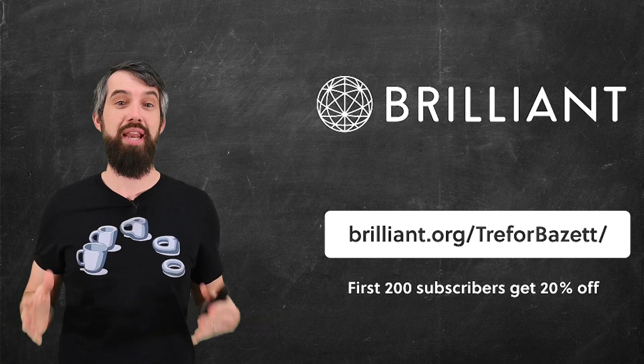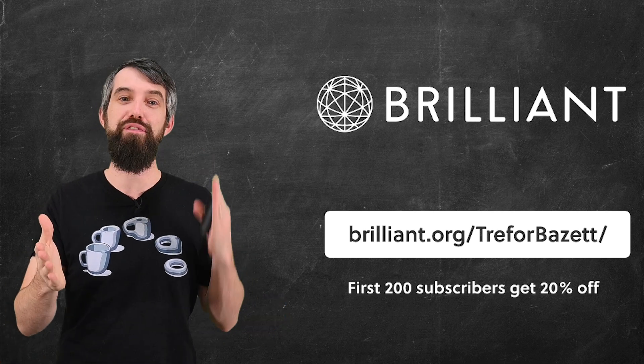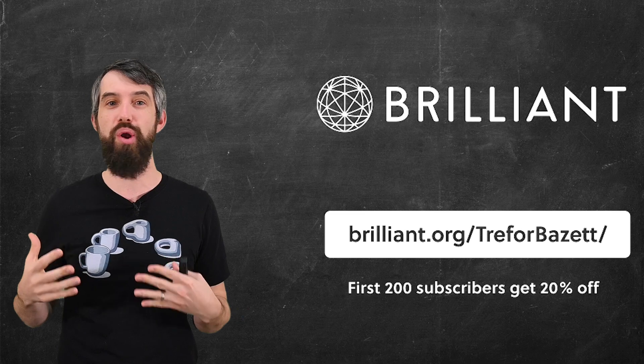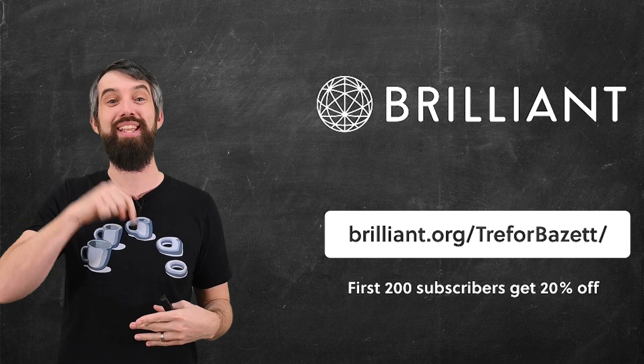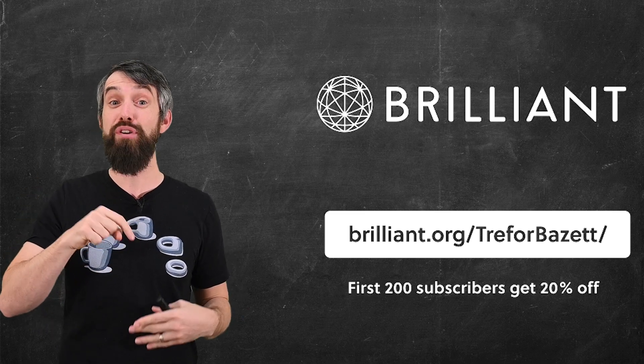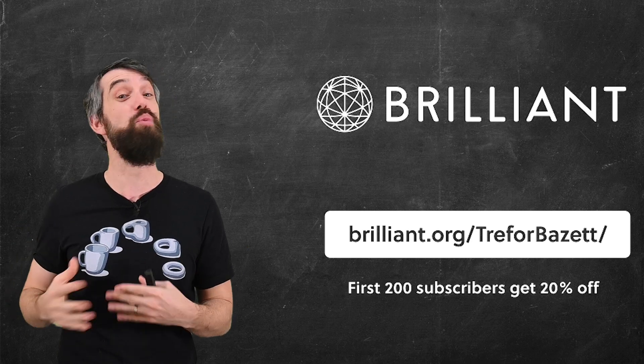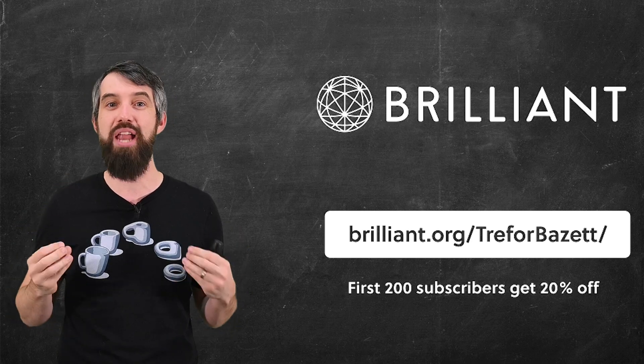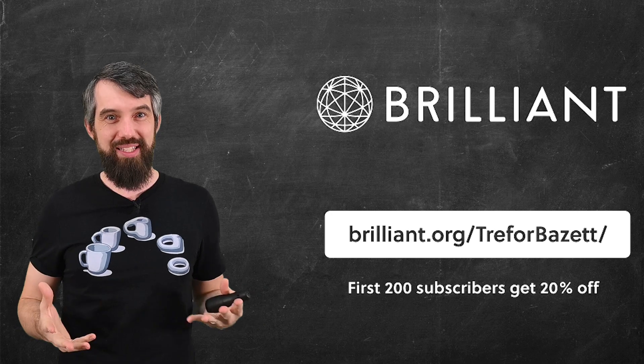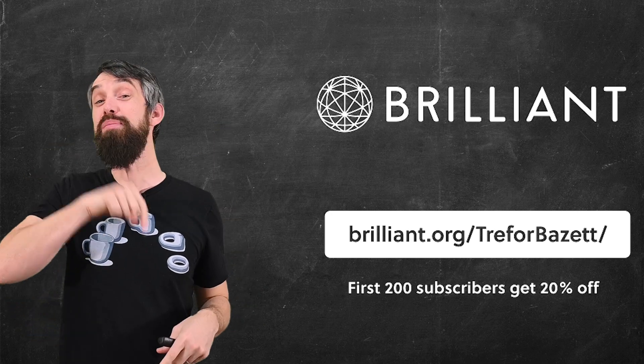To try everything that Brilliant has to offer for free for a full 30 days, go to brilliant.org slash Trevor Bazit, or click the link down in the description, and the first 200 of you to click that link will get an additional 20% off an annual premium subscription. With that said, if you have any questions, leave them down in the comments below, and we'll do some more math in the next video.